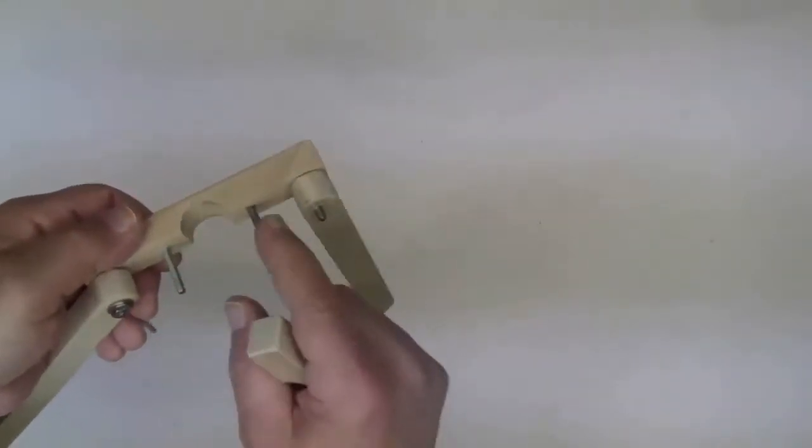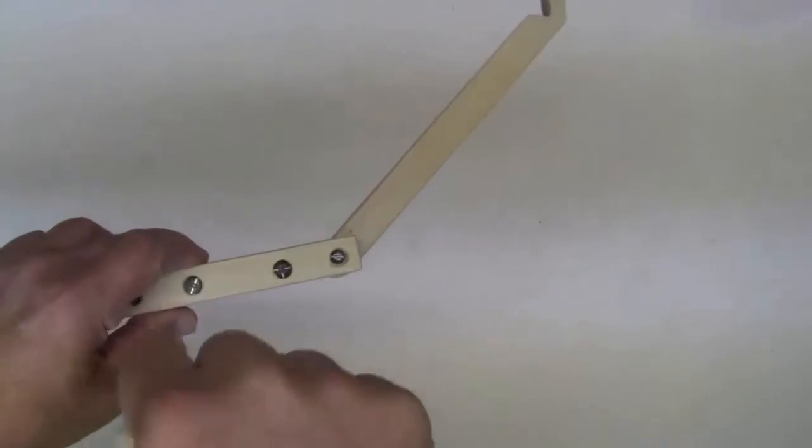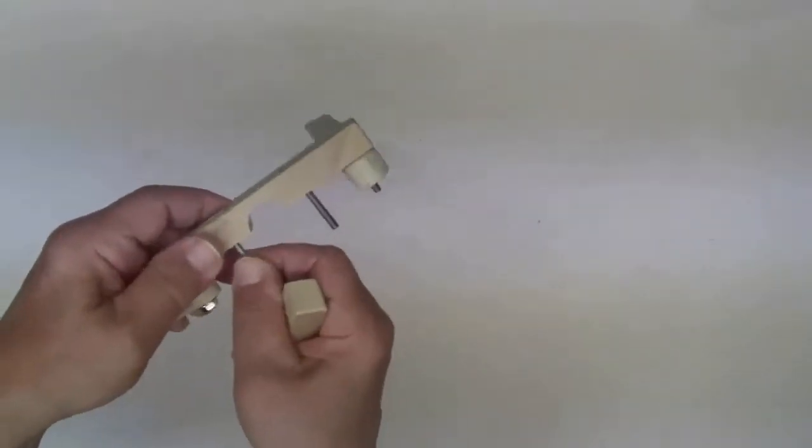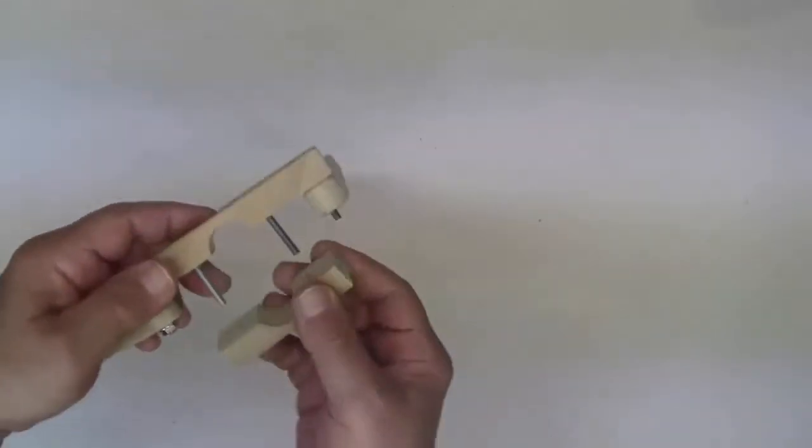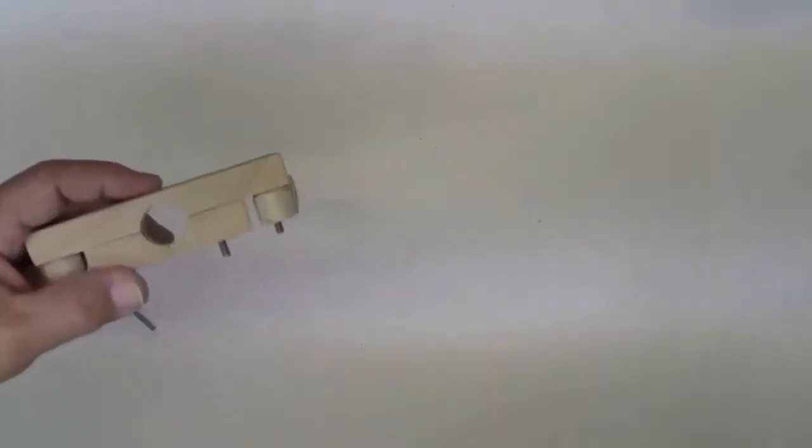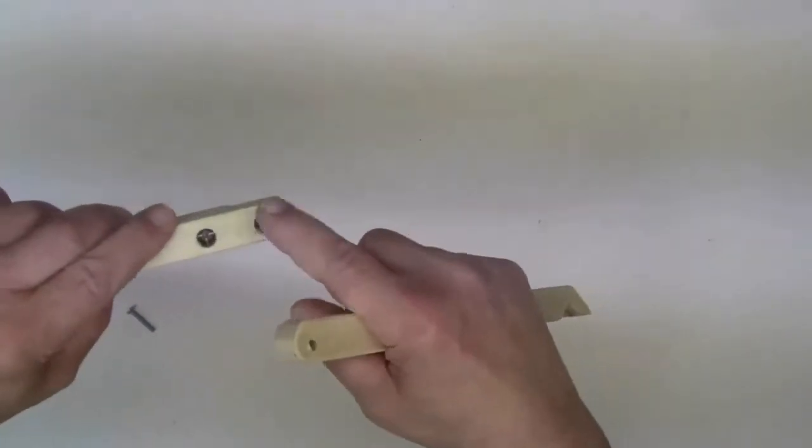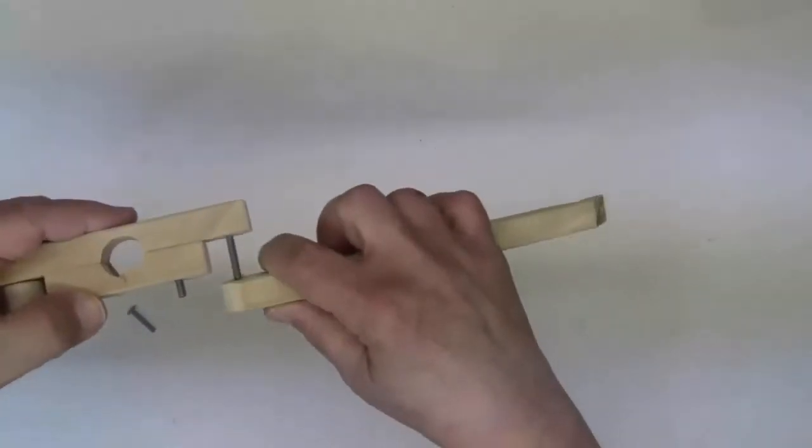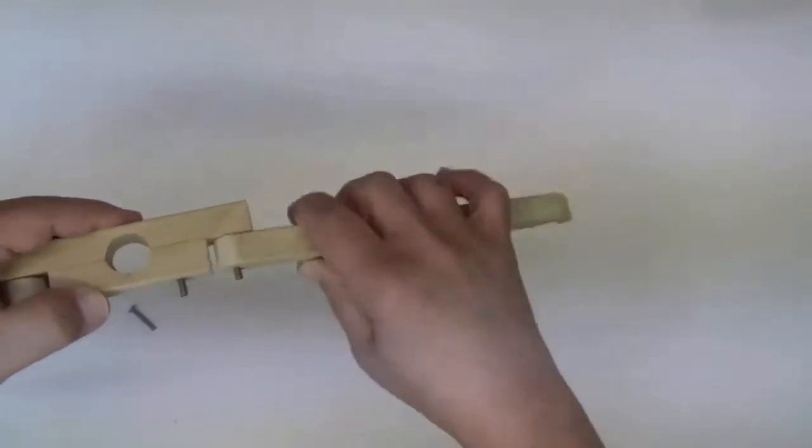And I drilled the hole small enough so that I could thread it into this wood and it stays there permanently. Same thing with the diagonal pieces. I recessed the screw, drilled it through so that it's permanent, and then the recess piece goes on.